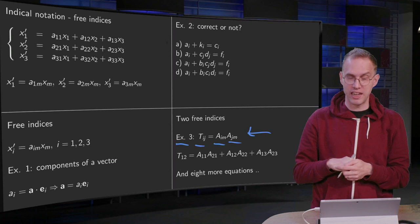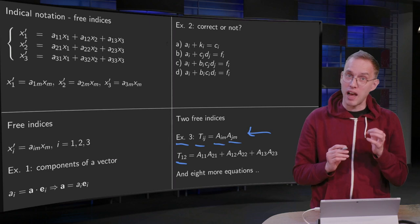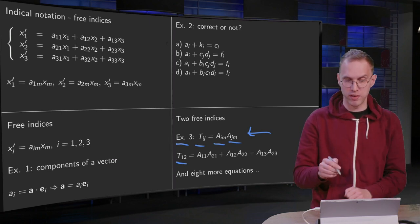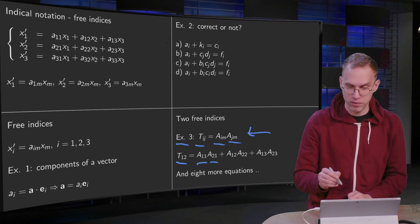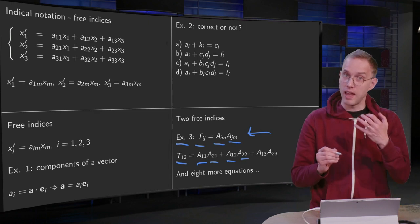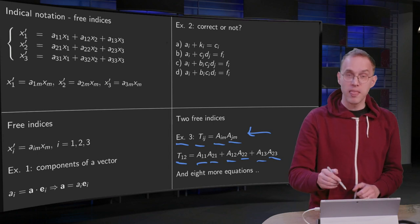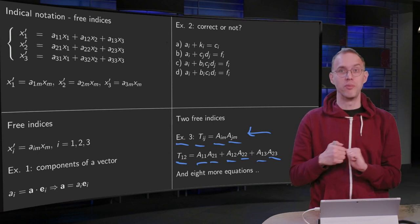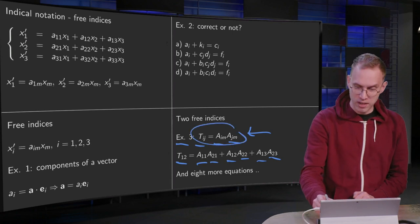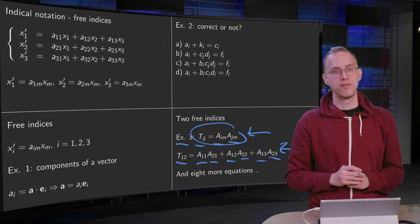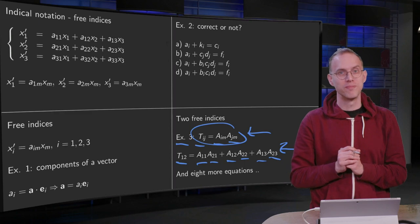Let's write them down. For example, for T12, what do you get then? You have i equals one and j equals two. You have the sum over m, so you get a11 a21 for m equals one, and a12 a22 for m equals two, and a13 a23 for m equals three. And you have eight more equations like this. So writing just this one expression gives you nine equations of this type. Using these free variables you can really reduce the notation a lot.